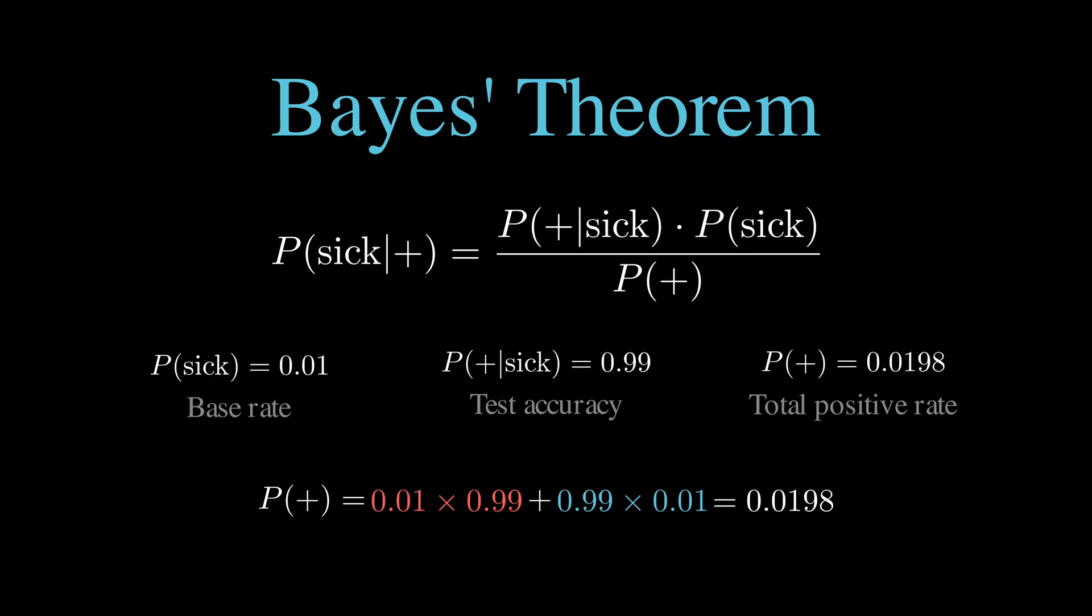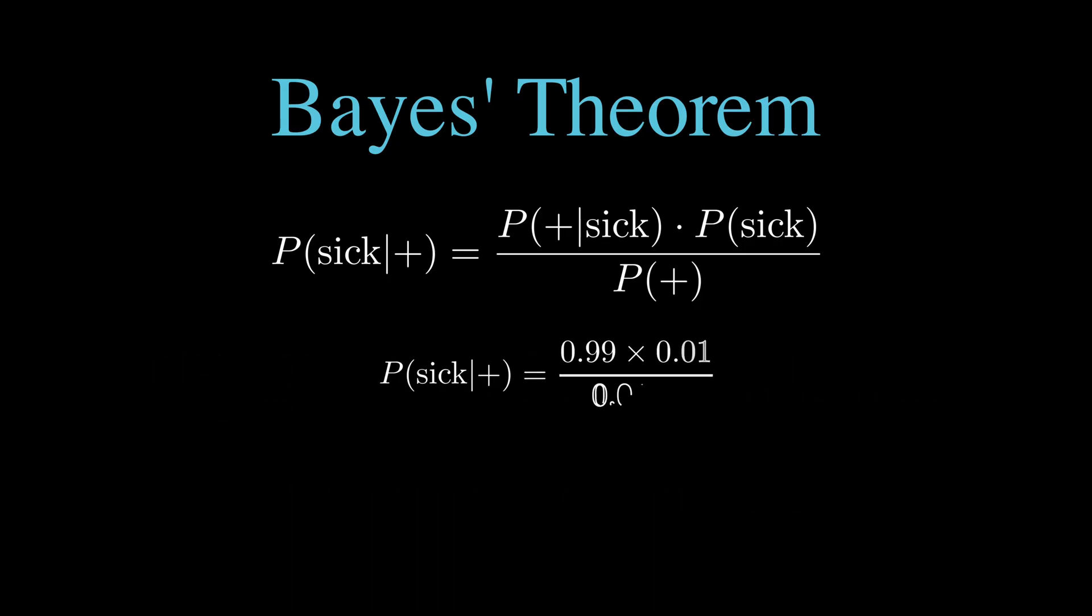Now, we can put it all together. P(sick|+) equals 0.99 times 0.01 divided by 0.0198. That's 0.0099 divided by 0.0198, which equals exactly 0.5 or 50%. The calculation confirms what we discovered by counting. You have a 50-50 chance of actually being sick if you test positive.